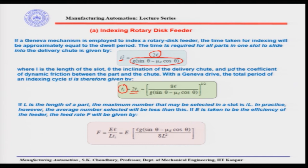If capital L is the length of the part, the maximum number that may be selected in a slot is small l divided by capital L. In practice this maximum is not always achieved, so the actual feed rate is the maximum feed rate multiplied by the efficiency E, giving the mean or average feed rate. Without multiplying by E, this is the maximum feed rate the feeder can provide.